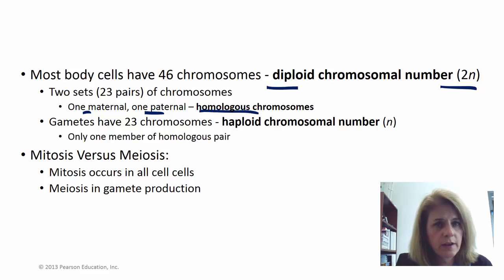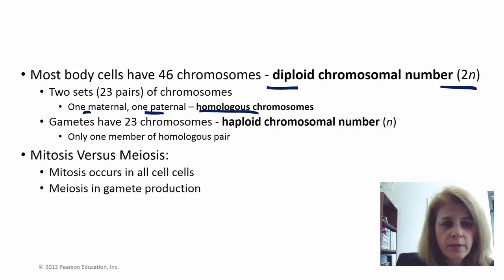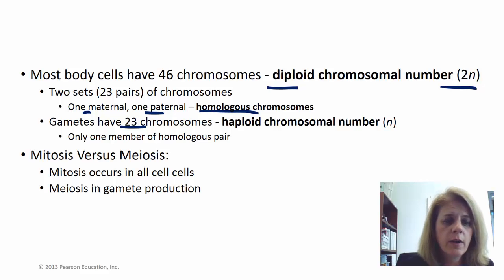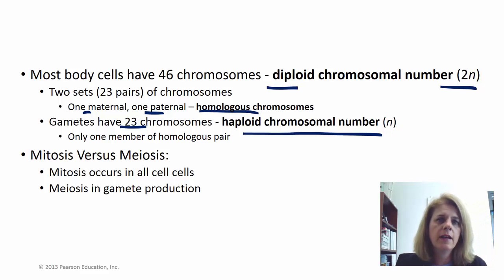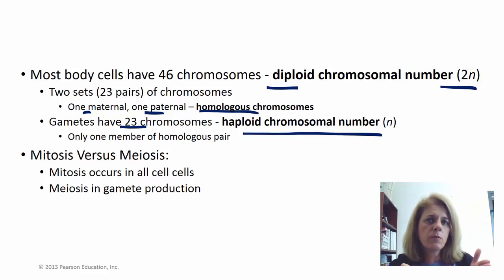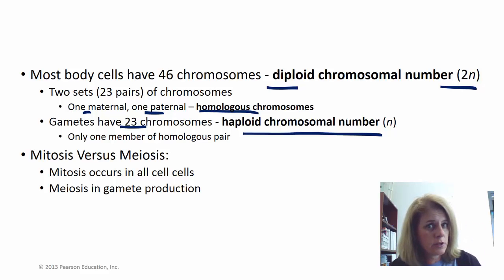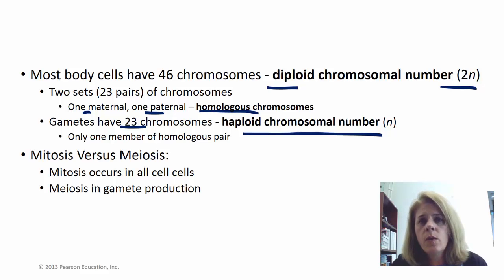With gametes — sperm and egg — that's different. Instead of having 46 chromosomes, they only have 23; they just have one set of the homologous pair. They're called haploid, or 1n. A sperm has half the chromosomes and an egg has half the chromosomes, so when they join together you get a full set.